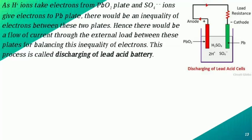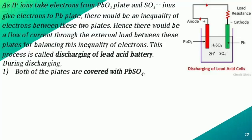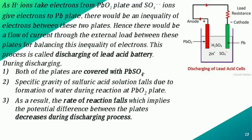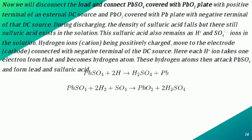This is the figure of the discharging lead-acid cell. As H⁺ ions take electrons from the PbO₂ plate and SO₄ ions give electrons to the Pb plate, there is an inequality of electrons between these two plates, hence there is a flow of current through the external lead between the plates to balance this inequality. This process is called discharging. During discharging, both plates are covered with PbSO₄. The specific gravity of the sulfuric acid solution falls due to the formation of water, causing the potential difference between the plates to decrease.